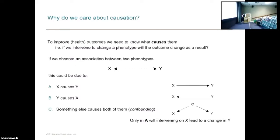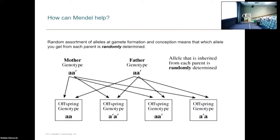So why am I talking about this at a conference about Mendel? We can use the random assortment of alleles at gametic formation and conception as a form of randomization. For a given set of parental alleles, what you get from your mum and what you get from your dad is random, and what you get from your mum is also completely independent of what you get from your dad. So which combination of alleles you get is randomly determined.